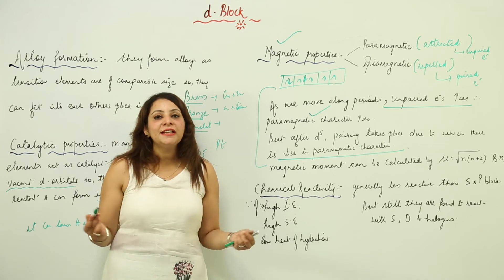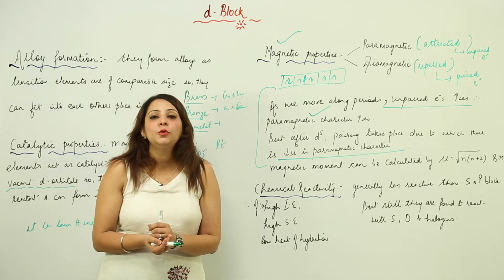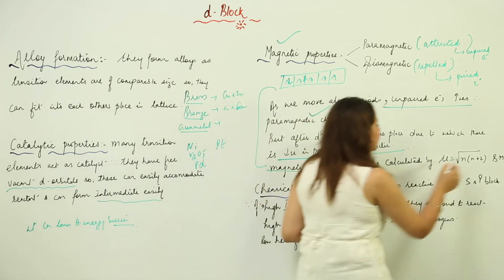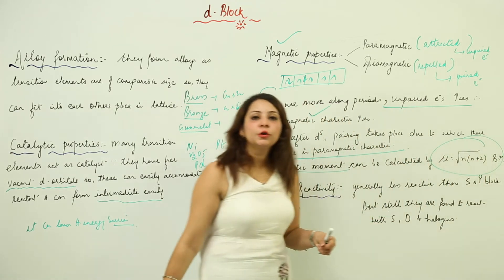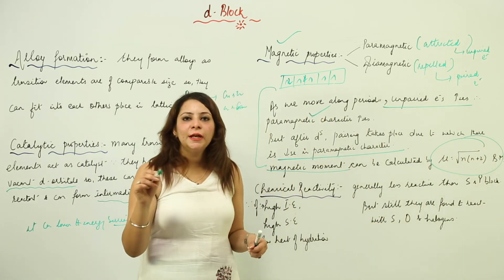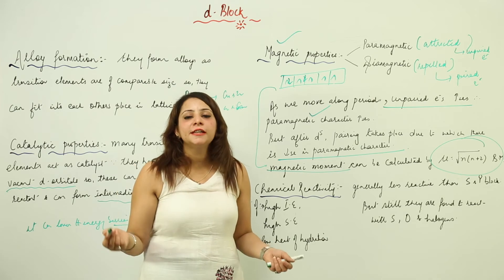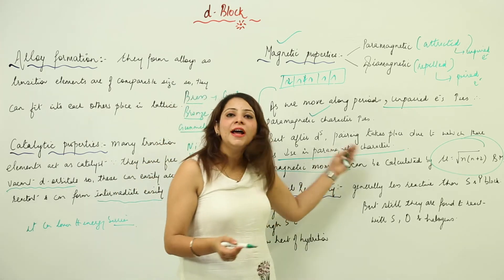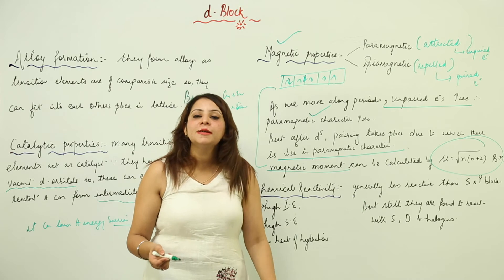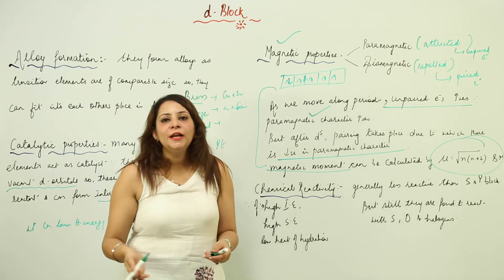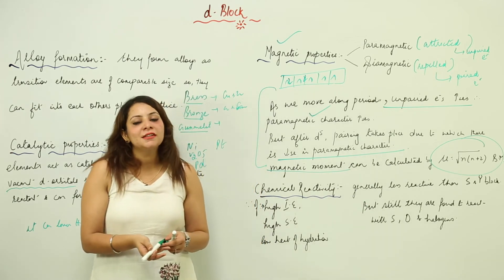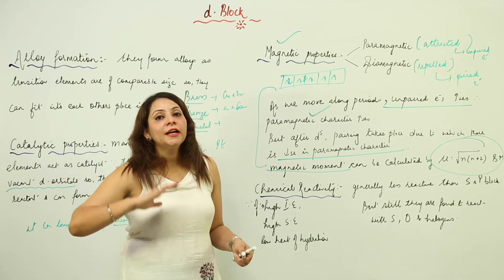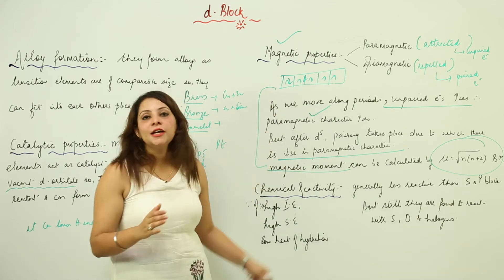We can calculate magnetic behavior by looking at the magnetic moment. The formula is: μ = √(n(n+2)) Bohr magnetons, where n is the number of unpaired electrons. A higher value of magnetic moment means greater paramagnetic character, and a lower value means less paramagnetic character. This is how you account for magnetic behavior of the d-block elements.